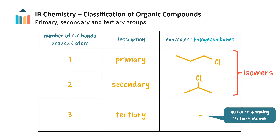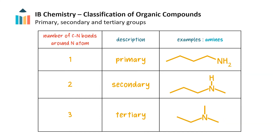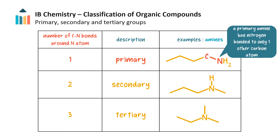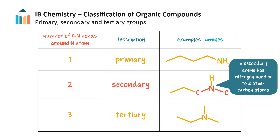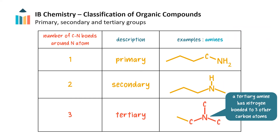In this case there is no corresponding tertiary isomer. Amines are described slightly differently. In these compounds the labels primary, secondary, and tertiary indicate the number of carbon atoms bonded to the nitrogen atom. For example, this compound is a primary amine, this is a secondary amine, and this is a tertiary amine.